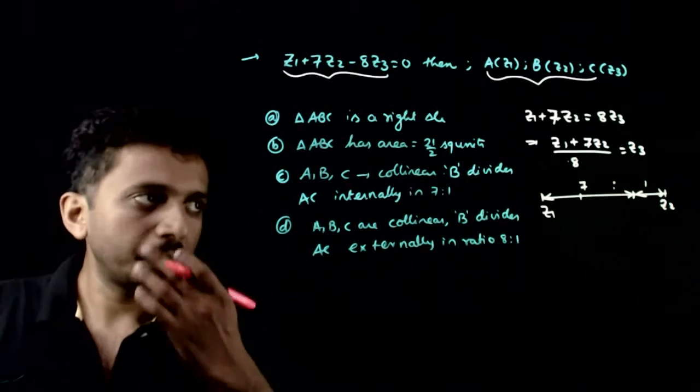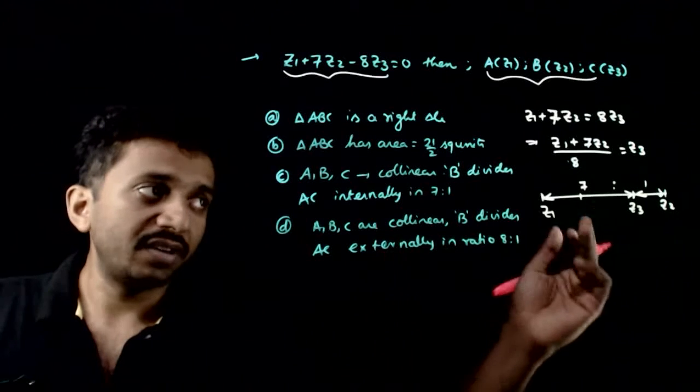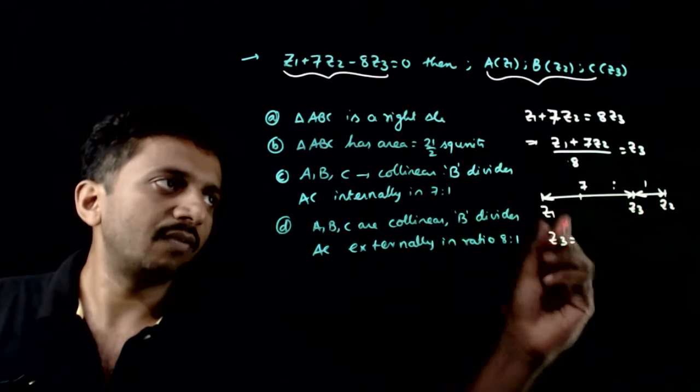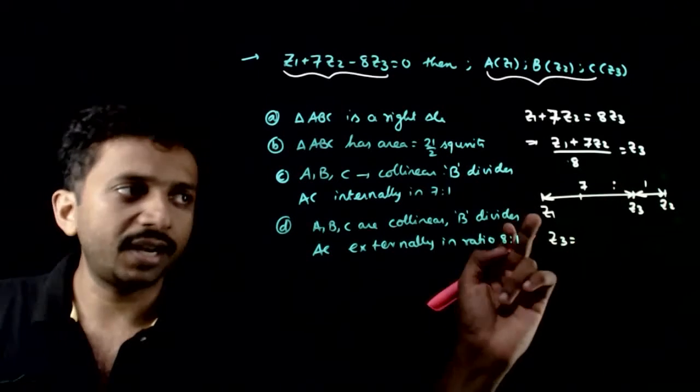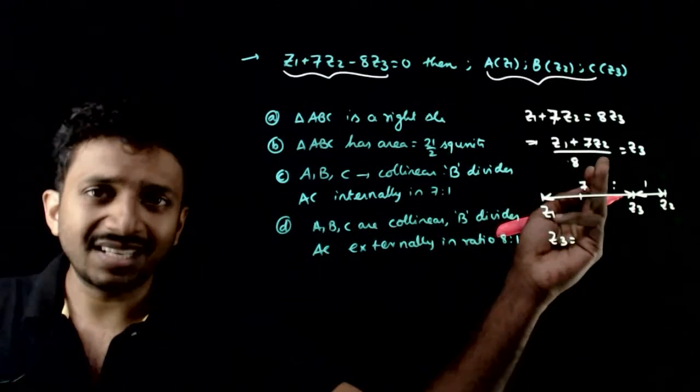If Z3 divides Z1 and Z2 in the ratio 7 to 1, then Z3 equals 7 times Z2 cross multiplication plus 1 times Z1 divided by 7 plus 1, which is 8. That is exactly what is given.